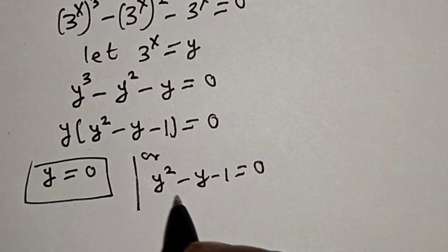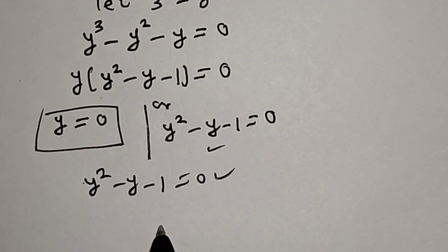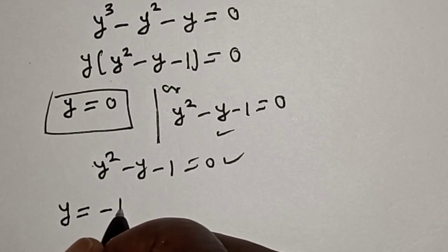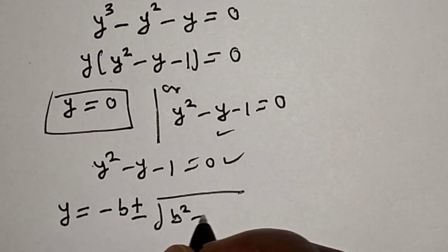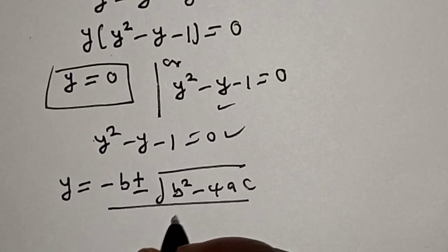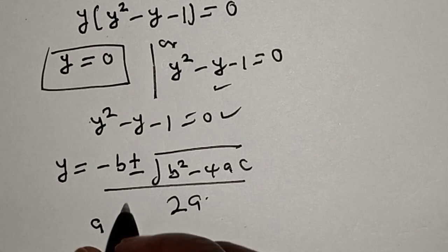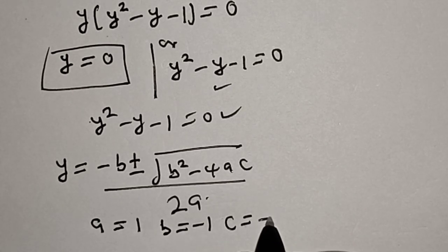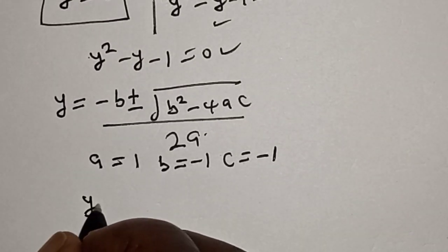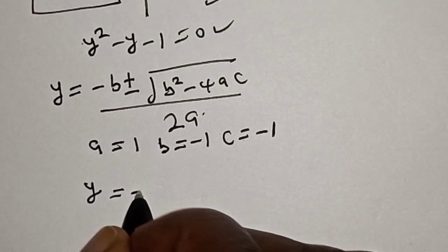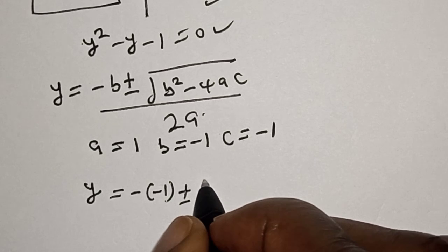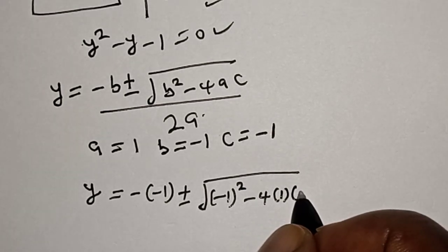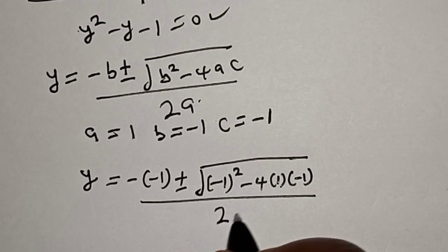This is y equal to 0, and let's solve the quadratic equation y squared minus y minus 1 equals 0 using the quadratic formula: y equals negative b plus or minus square root of b squared minus 4ac, over 2a. Here a equals 1, b equals negative 1, c equals negative 1. Let's substitute.